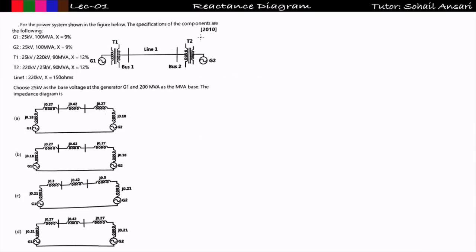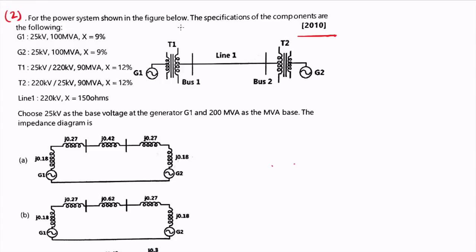Now let's look at the next question, also from GATE 2010 for two marks. The system has generator G1 connected to transformer T1, then a transmission line, then transformer T2, and generator G2. The rating of G1 is 25 kV, 100 MVA with reactance of 9% — that is 0.09 pu. G2 is also at 25 kV. Transformer T1 is 25 kV / 220 kV and T2 is 220 kV / 25 kV.